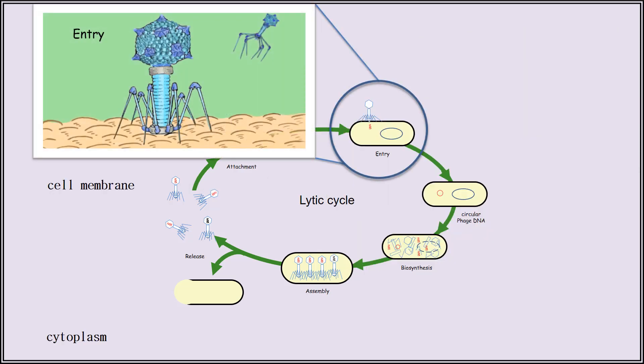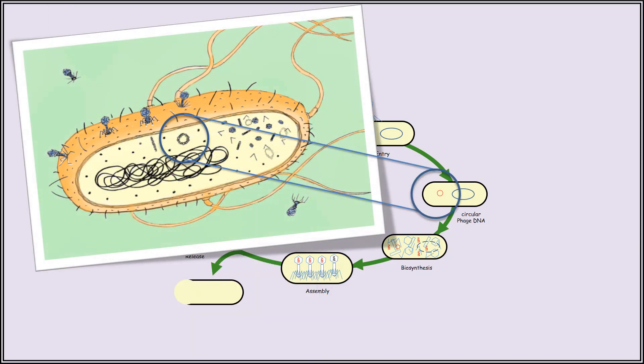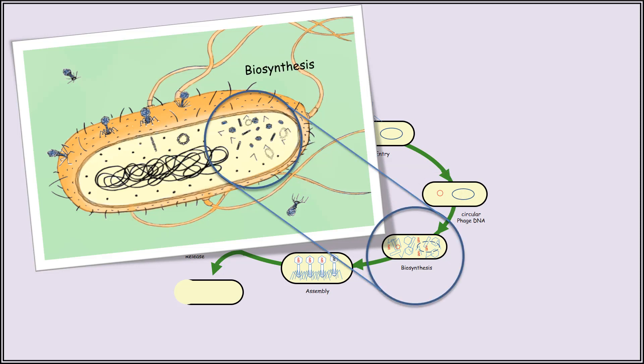Next, the virus will react by contracting its tail, pushing its tail pins through the bacterial cell membrane, and injecting its DNA inside the cell like a syringe. This is called the entry step. Once inside the cytoplasm, the bacteriophage's DNA will immediately circularize upon itself, marking the beginning of the biosynthesis step.